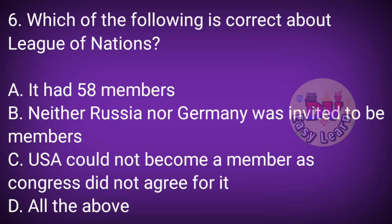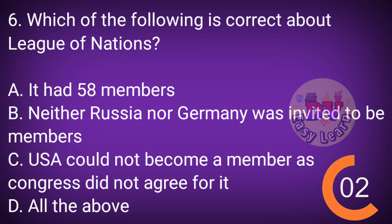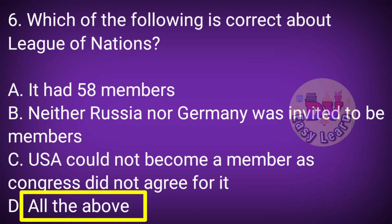Question No. 6: Which of the following is correct about the League of Nations? Correct answer: All of the above. It had 58 members; neither Russia nor Germany was invited to be members; and the USA could not become a member as Congress did not agree to it.